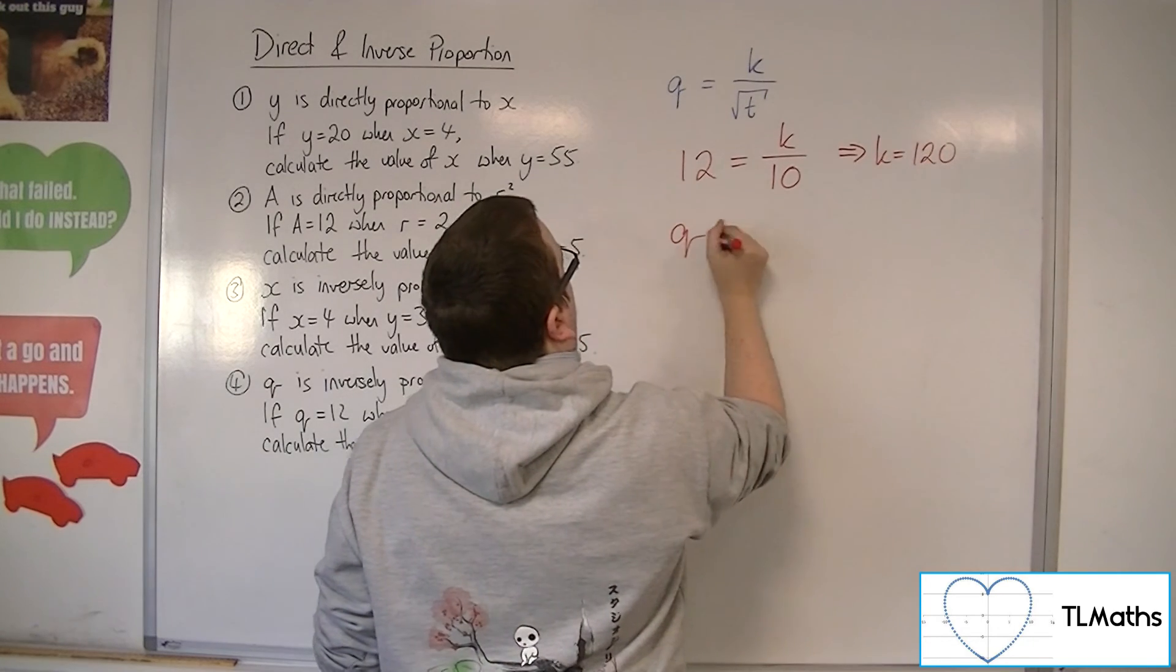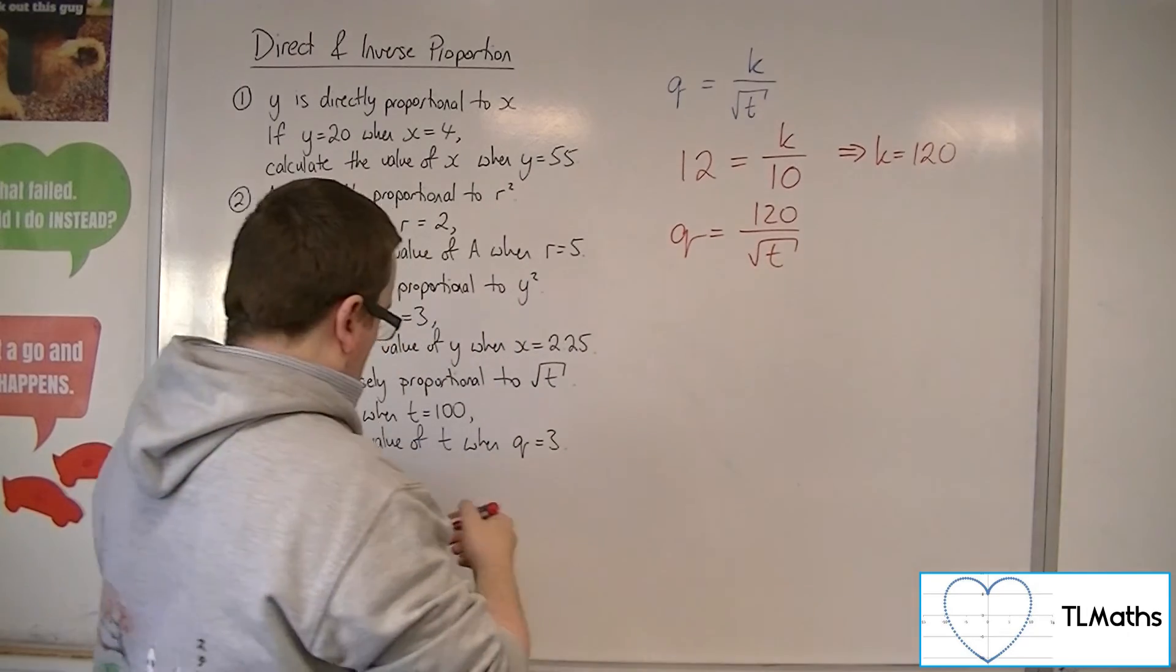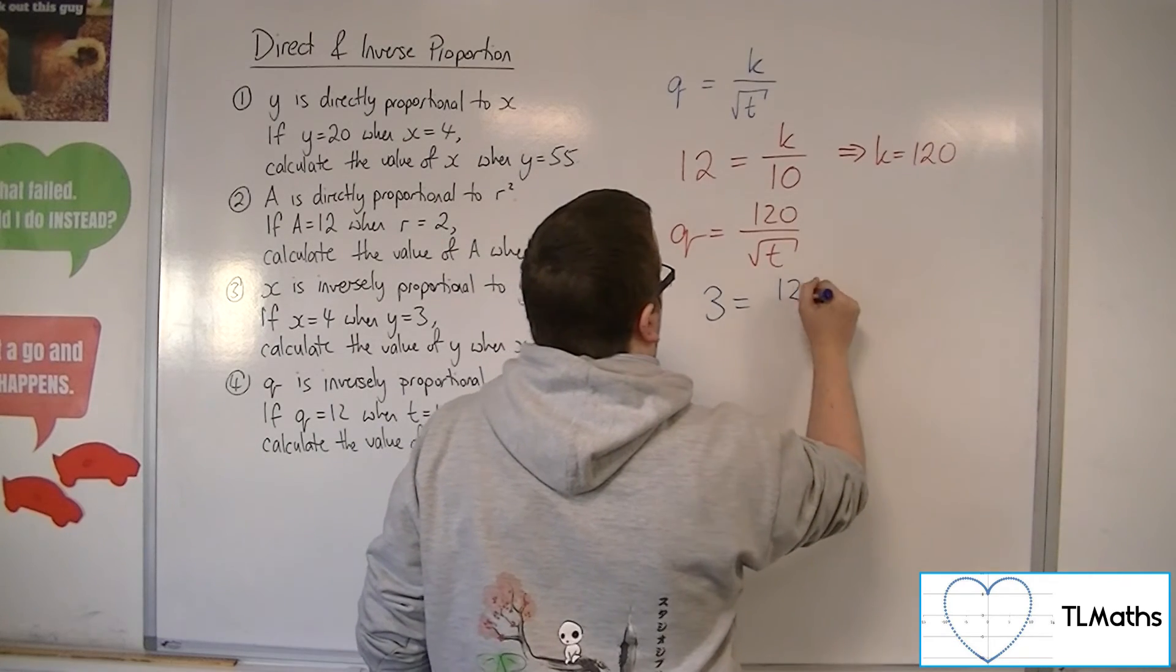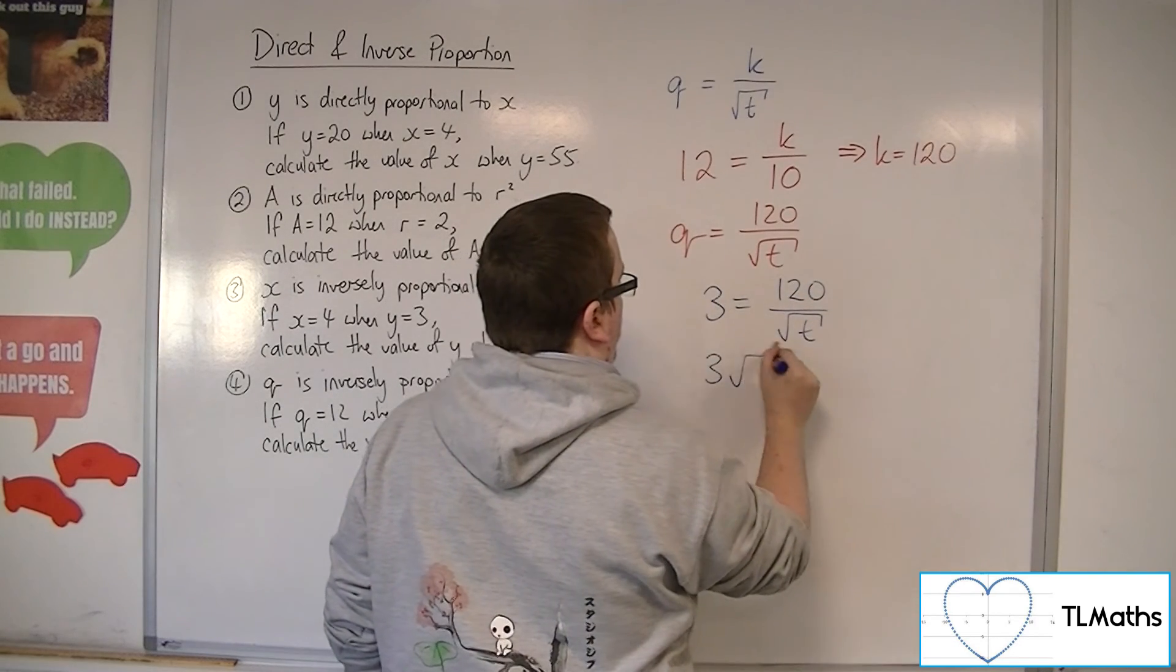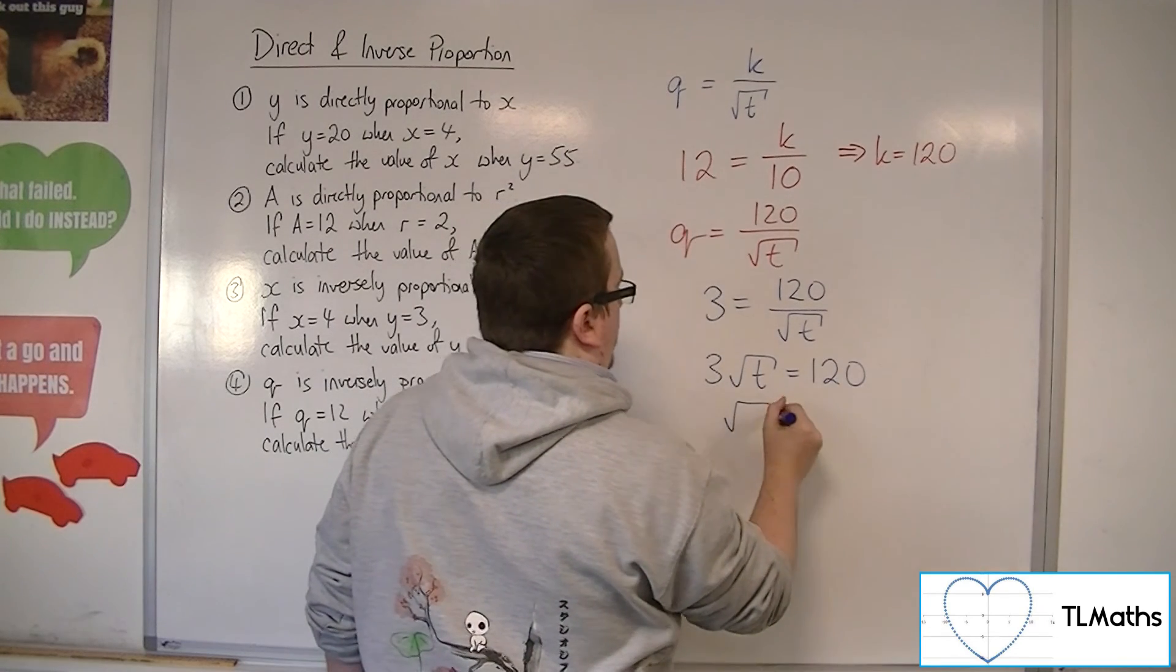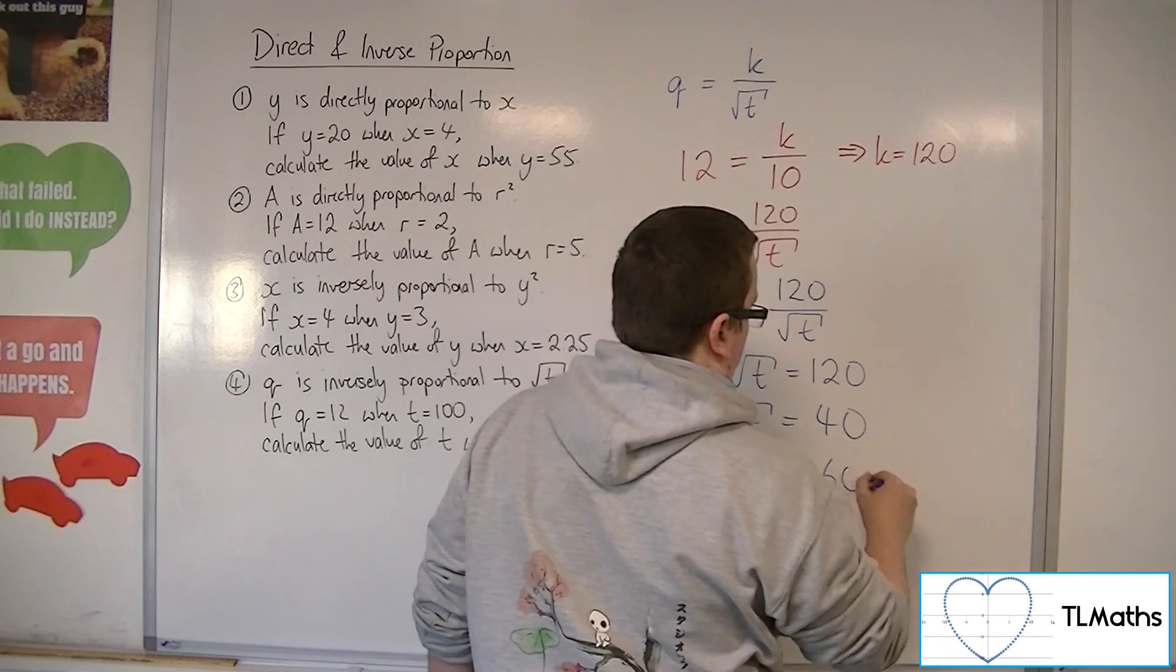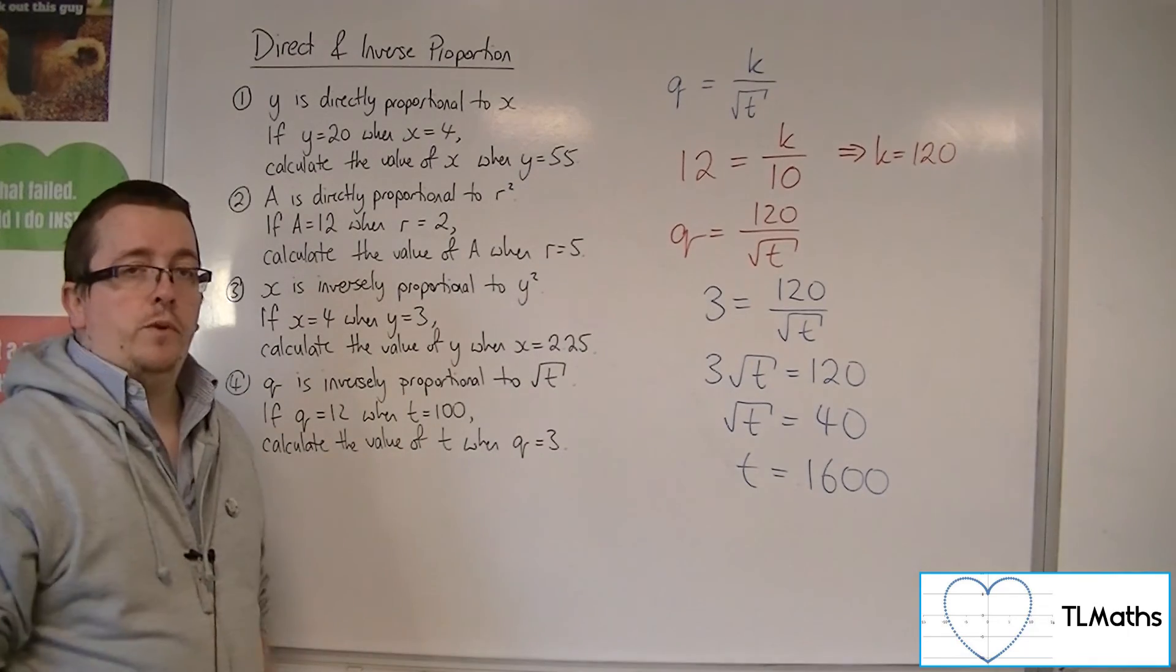So q is equal to 120 over root t. Calculate the value of t when q is equal to 3. So 3 is equal to 120 over root t. So multiply both sides by the root t. Divide both sides by 3. And then you can square both sides. So t would have to be 1,600.